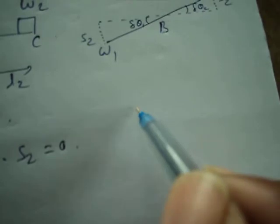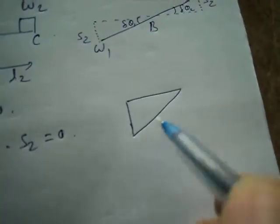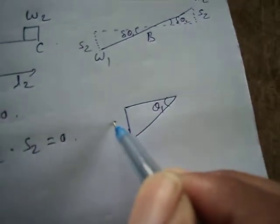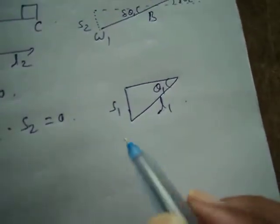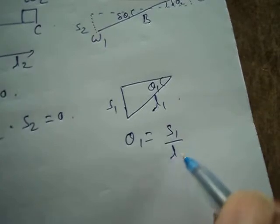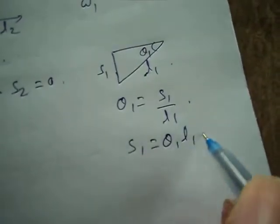Here we consider that this is the triangle and this is the angle theta1 and this is the S1 and this is L1. Theta1 equal to arc by radius, so S1 equal to theta1 into L1.